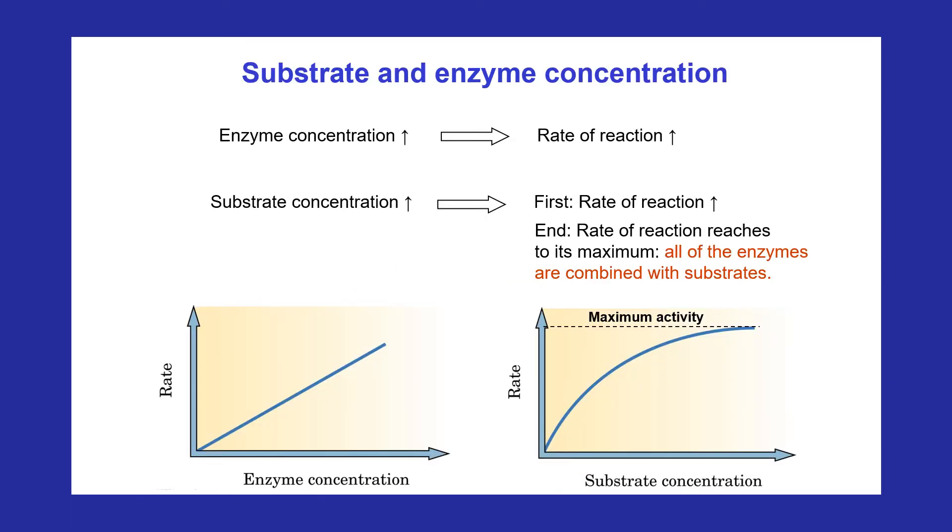In any catalyzed reaction, the substrate must first bind with the enzyme to form the enzyme-substrate complex. When enzyme concentration increases, the rate of catalyzed reaction increases because they produce more enzyme-substrate complex.